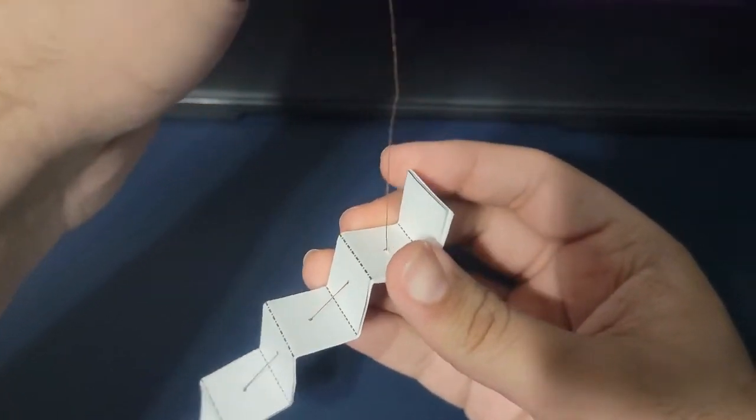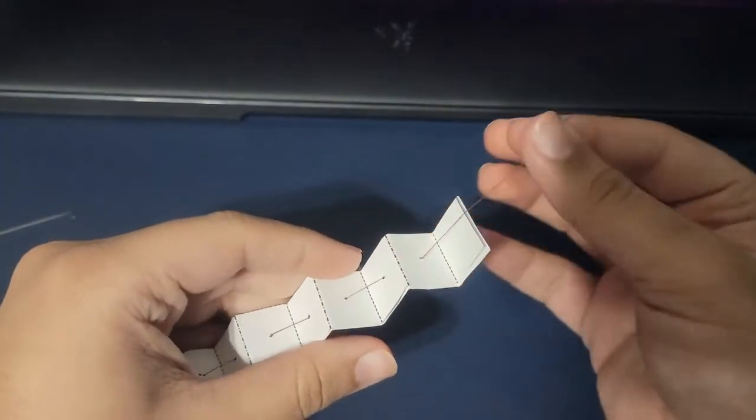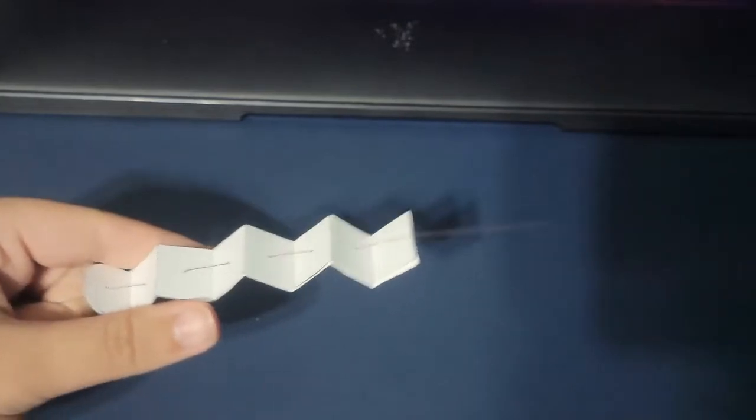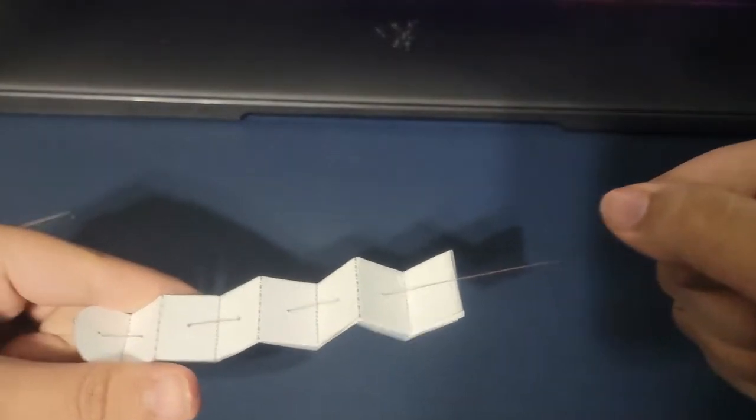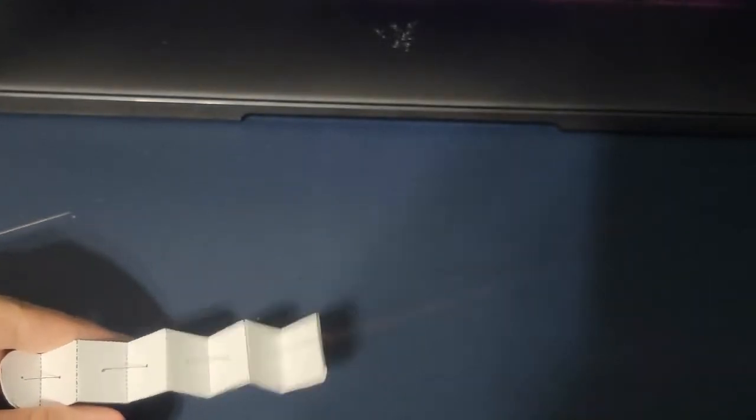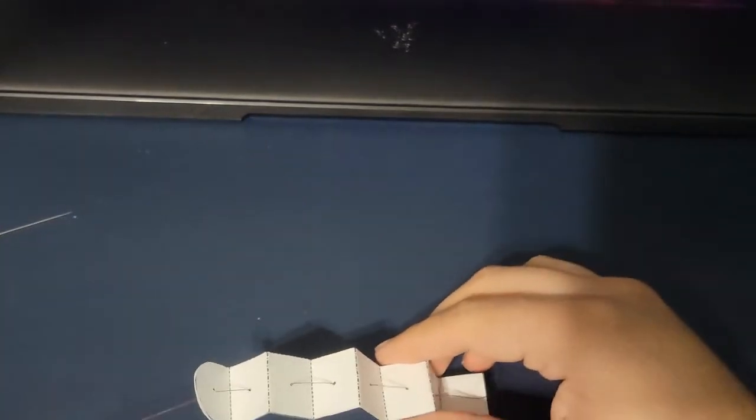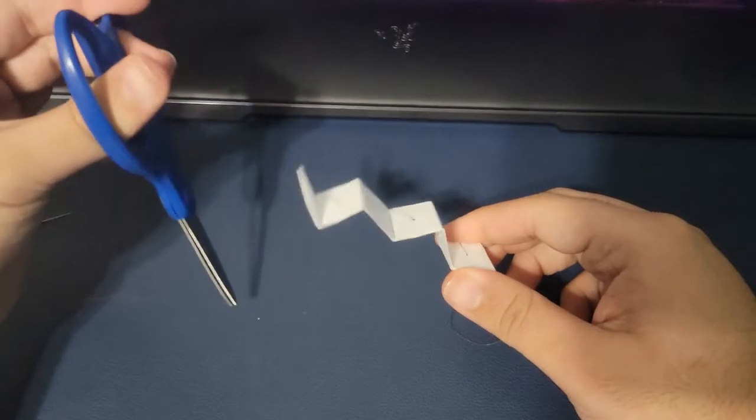Once you're out, you're going to pull the needle off and put that aside. Now you have the string going all the way through. You're going to want to leave about 10 inches off from one end, pull a good amount through, and then take your scissors and just cut off the other end.